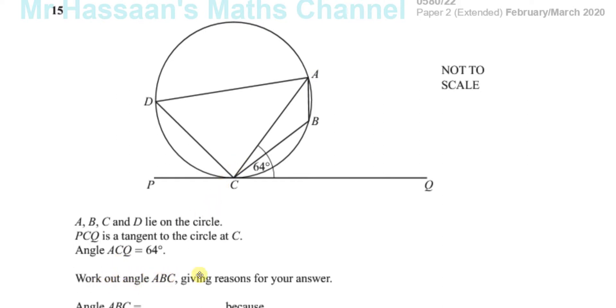Now, work out angle ABC, giving reasons for your answer. Okay, so we've got to find this angle here. This angle over here. Now, what we can do is, because this angle here meets the chord AC, the angle between the tangent and the chord. Okay, there's a theorem called the alternate segment theorem.